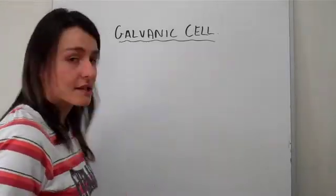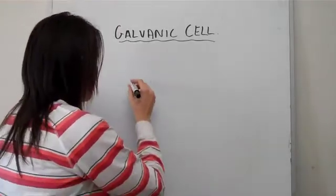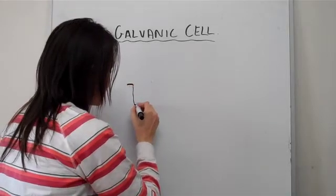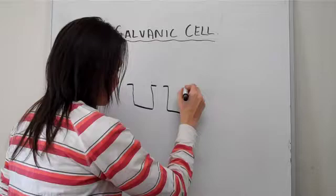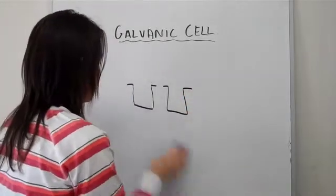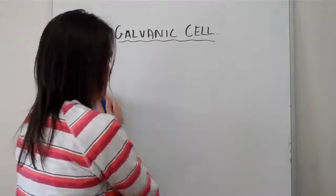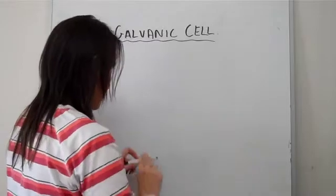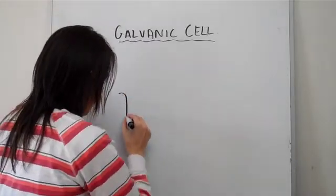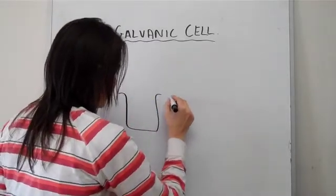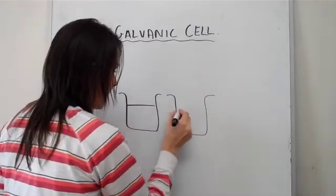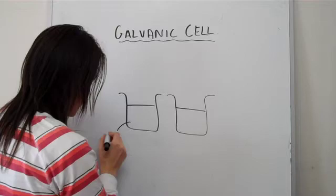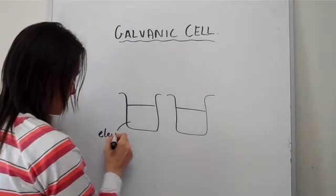The first thing that you need for a galvanic cell is generally just two beakers. So we have a beaker here and a beaker there, and inside that beaker we have a solution called an electrolyte.